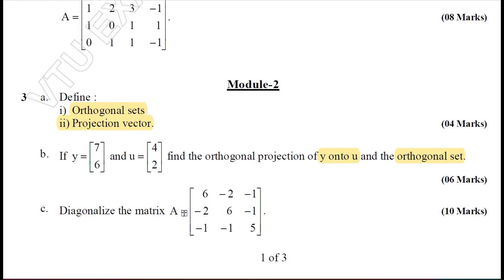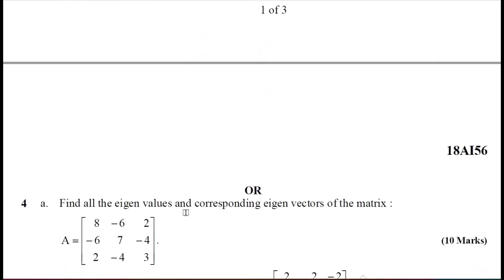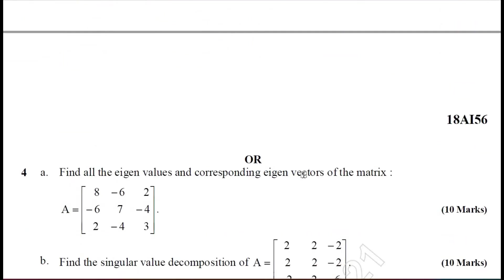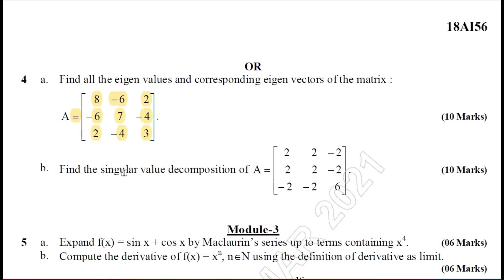Diagonalization I have also solved in the previous video. You can find eigenvalues and eigenvectors, and after getting eigenvectors, find the modal matrix P. From that modal matrix P, you can find P inverse AP, which gives you the diagonal matrix. Moving on to Question 4A, find all eigenvalues and corresponding eigenvectors for the given matrix — refer the previous video. Question 4B is on SVD (singular value decomposition), which I have also discussed in the previous video.